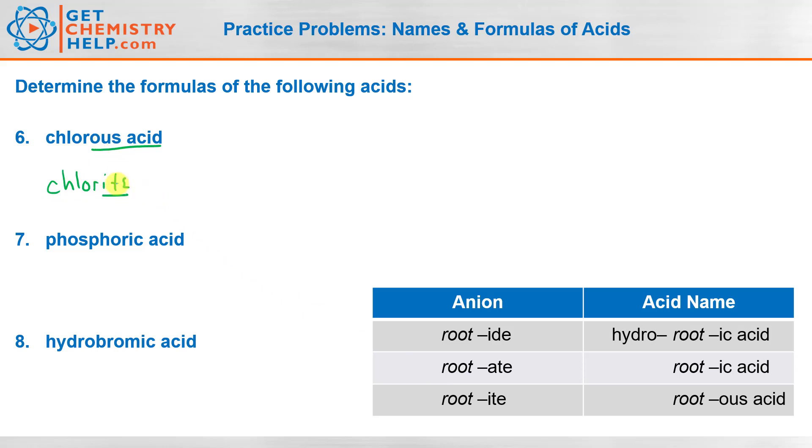Because again, ous came from ite. Well, what is the chlorite ion? Well, we know from our lesson on polyatomics that ite tells me it's one less oxygen than chlorate. Chlorate is ClO3 negative. So chlorite must be ClO2 negative. So that's the base anion.